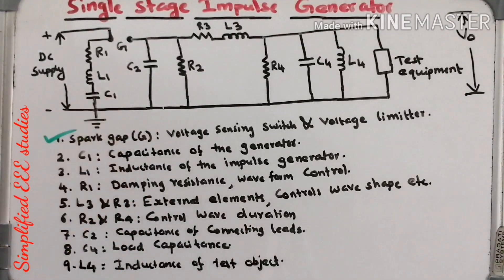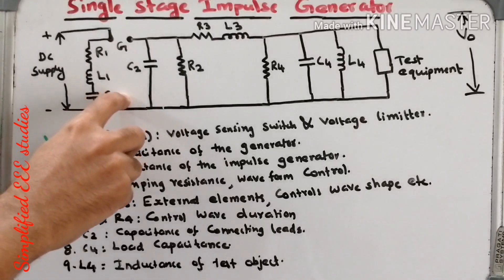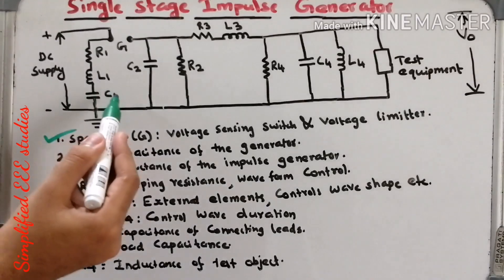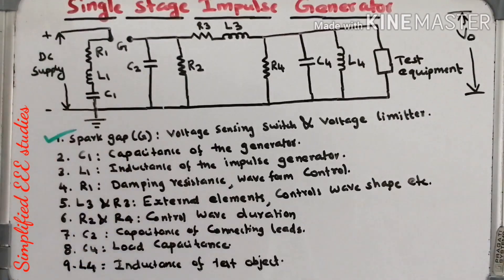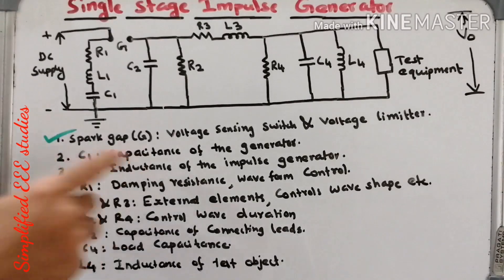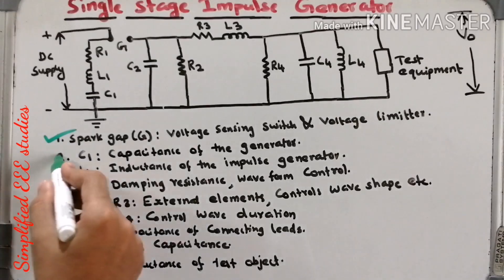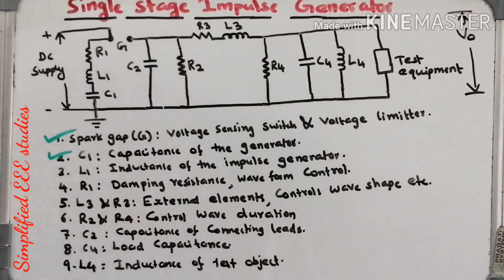The capacitor C1 is the important component of the single stage impulse generator. The main functions of capacitor C1 are charging as well as discharging. In the first stage, it is going to charge completely, then it is going to discharge. C1 is the capacitance of the impulse generator. In a multi-stage impulse generator, we have a group of capacitors that charge serially and discharge in parallel.